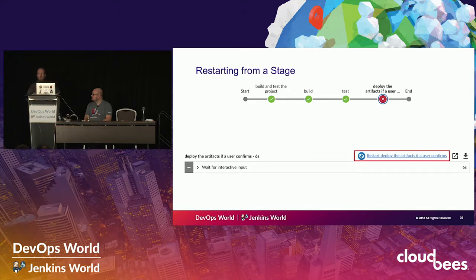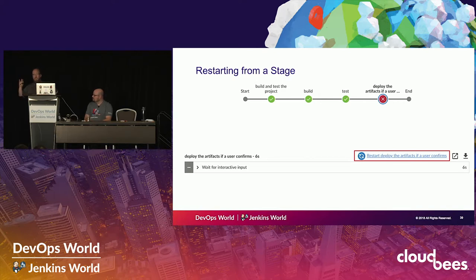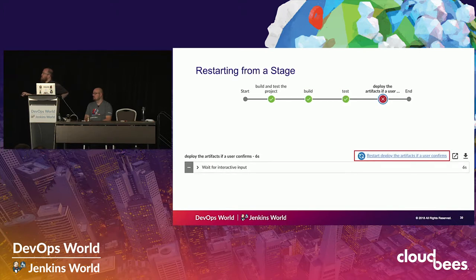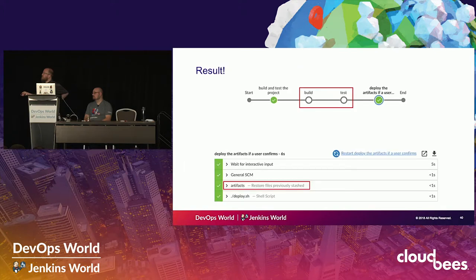How do you restart from a stage? You click the thing that says restart and then the stage name - it's really that simple. For parallel or sequential stages, it'll show the parent of the stage. All you do is click that and it just happens. In the visualization, the result is that the stages that are skipped just get grayed out. The last time we saw it wasn't doing anything, but this time we see we're restoring artifacts that we'd previously stashed and then running our deploy - reusing the stuff we already built and tested that we knew was good.